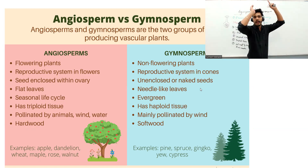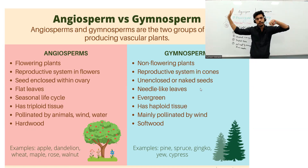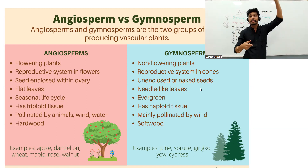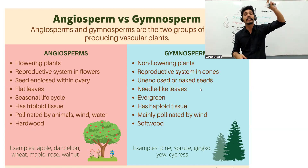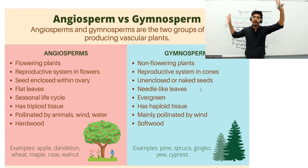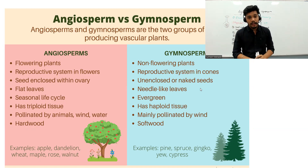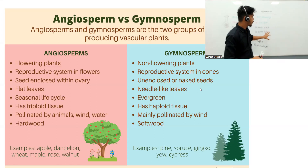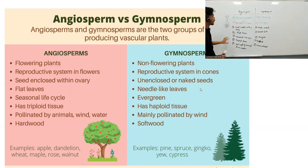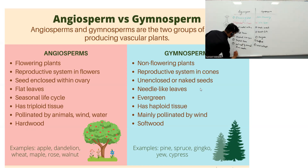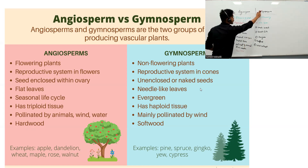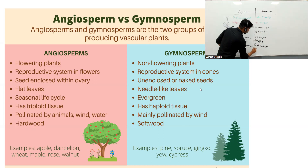To summarize major differences: angiosperms have flowers; gymnosperms are non-flowering. In angiosperms, seeds are enclosed within the ovary; in gymnosperms, seeds are naked with no covering. Angiosperms produce hardwood, while gymnosperms give rise to softwood.